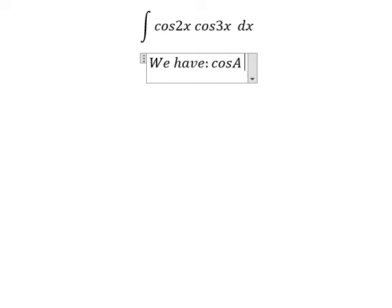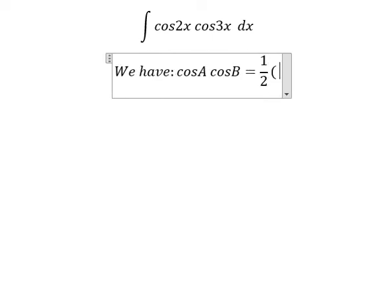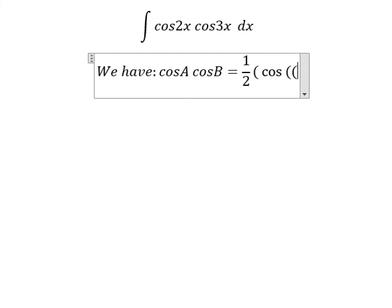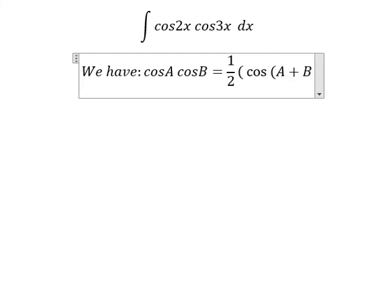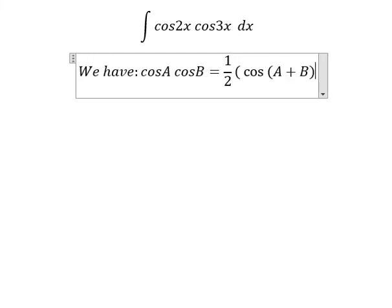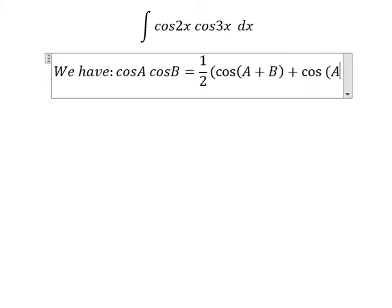Cosine A multiplied by cosine B equals one-half times cosine of A plus B plus cosine of A minus B.